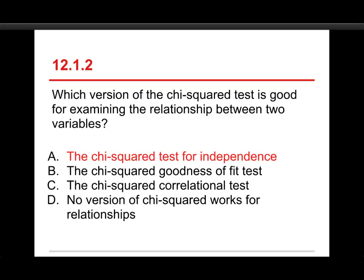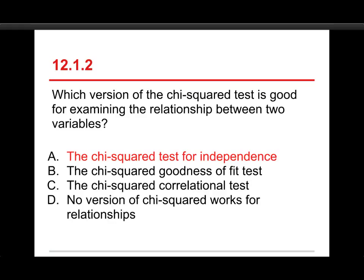Goodness of fit is for a single categorical variable. Chi-squared correlational test I made up, doesn't mean anything. And D just isn't correct because you can do it. Here are the example data that I used in the presentation and the text, where I have men and women enrolled in, this is hypothetical data about men and women getting awarded athletic scholarships in different sports.